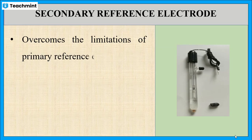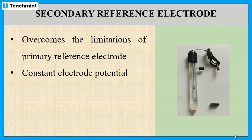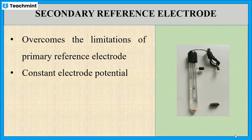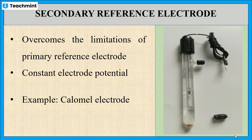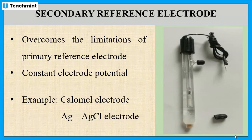Another limitation is that we cannot use the Standard Hydrogen Electrode in the presence of any oxidizing or reducing agent. In order to overcome the limitations of the primary reference electrode, some other electrodes of constant electrode potentials have been constructed, and those are known as secondary reference electrodes. The secondary reference electrode is the reference electrode whose potential is not zero but is exactly known to us, and this electrode potential value depends on the concentration of the solution in which it is dipped. The most common example is the calomel electrode, and another example is the silver-silver chloride electrode.